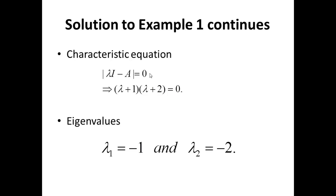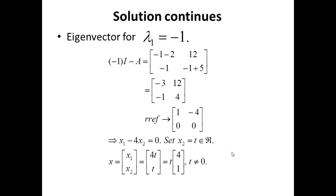Now we have the characteristic polynomial; let's get the characteristic equation. Det(Lambda I minus A) equals 0 implies (Lambda + 1)(Lambda + 2) equals 0. Solving this, we get eigenvalues Lambda₁ equals negative 1 and Lambda₂ equals negative 2. We start with the characteristic polynomial, get the characteristic equation, and that leads us to the eigenvalues. Next we find the eigenvectors corresponding to each eigenvalue by solving the homogeneous system (Lambda I minus A)x equals 0.